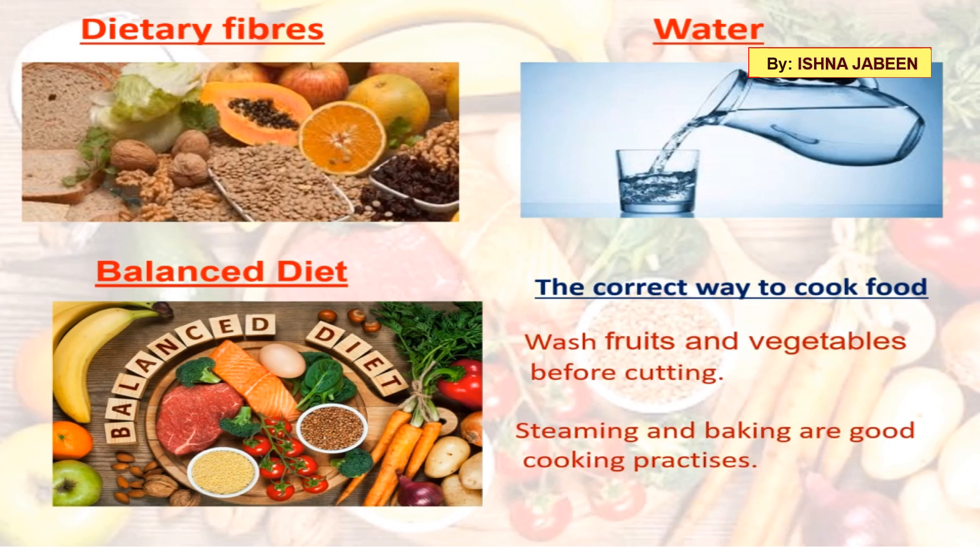Dietary fibers are also known as roughage. Foods rich in roughage are vegetables, as you can see in the picture, whole grains, fresh fruits, and pulses. Dietary fibers add bulk to undigested food material, which helps in easy bowel movements and removal of undigested food.